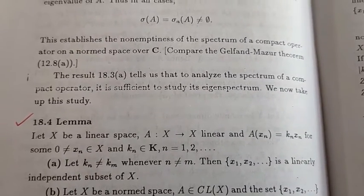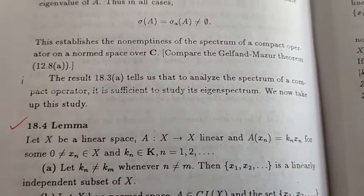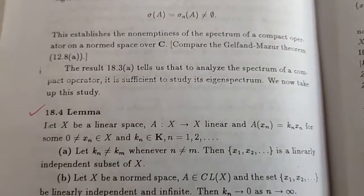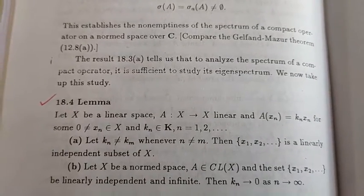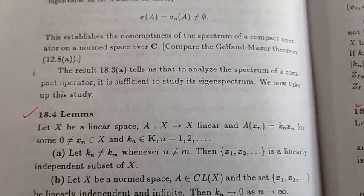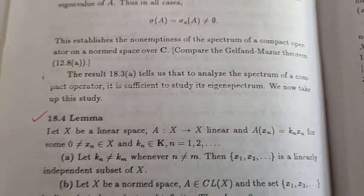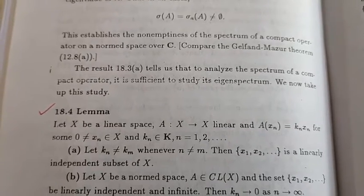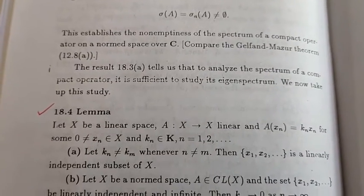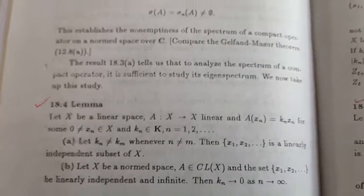So we have a linear map A on the linear space X, where A of x_n is defined as A of x_n equal to k_n x_n, with x_n not equal to 0, and k_n belongs to K.